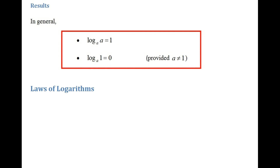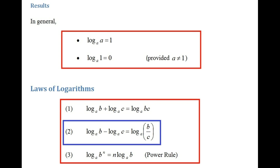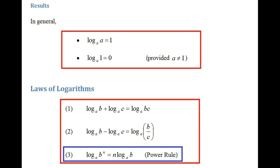Now let me go through the laws of logarithms. There are three laws. The first law: log of b to the base of a plus log of c to the base of a is the same as log of bc to the base of a. Law number 2: log of b to the base of a minus log of c to the base of a is the same as log of b over c to the base of a. And law number 3, also known as the power rule: log of b to the power n to the base of a is the same as n log b to the base of a. It's worthwhile memorising these laws.